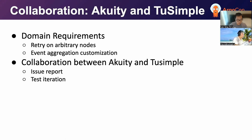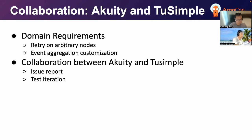Let me name some examples of the collaborations we had. One example is during our process, sometimes before we finish the workflow, we don't know which step can cause issues or need a redo. So if one step fails, we might need to retry a few steps before the failed one. If we can have a feature to retry an arbitrary node, that will make it more flexible to implement. Another example is we listen on workflow events to notify other microservices of status changes — we need event aggregation and customization to better meet the requirements. Both of these features are critical for us, and Acuity helped us a lot on these. We worked together on issues and tests.